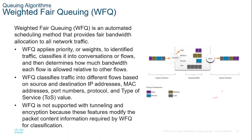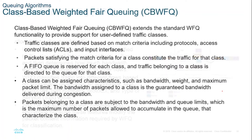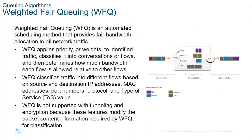Low-bandwidth traffic flows, which comprise the majority of traffic, receive preferential service, allowing their offered loads to be sent in a timely fashion. High-volume traffic flows share the remaining capacity proportionally among themselves. However, WFQ is not supported with tunneling and encryption because these features modify the packet content information required by WFQ for classification.